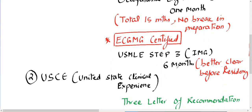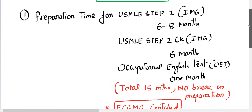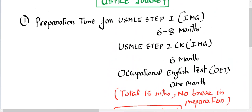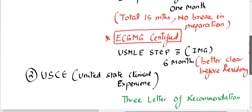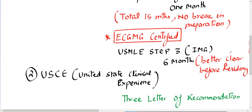For the Step 1 actual exam, there are seven blocks; one block is 40 questions and you get one hour per block. You can log in to www.ecfmg.org for all the details. For Step 2 CK, it is a nine-hour exam with eight blocks of 40 questions each. Step 3 is a two-day exam.